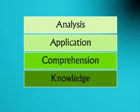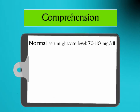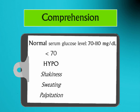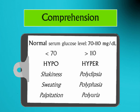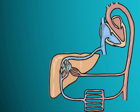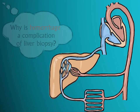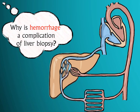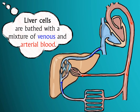The next level of questioning is comprehension. At this level, you are to demonstrate an ability to interpret, classify, and organize the information. So if we take the same topic of liver biopsy and ask why hemorrhage is a complication of a liver biopsy,